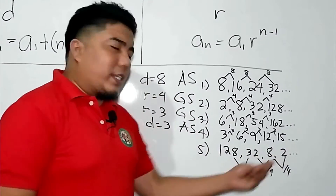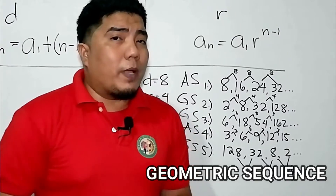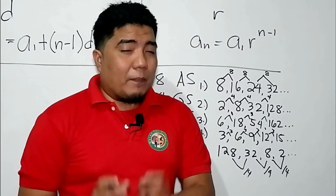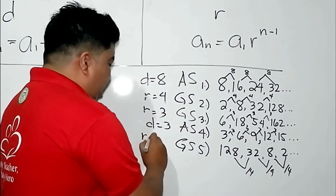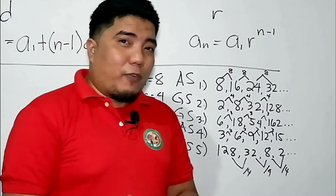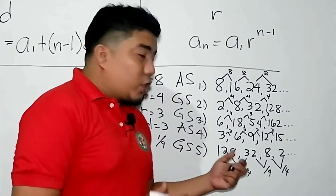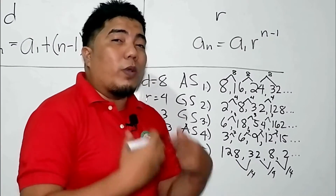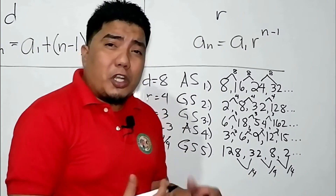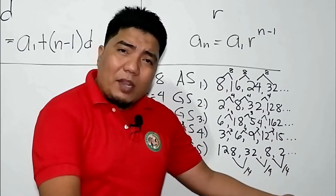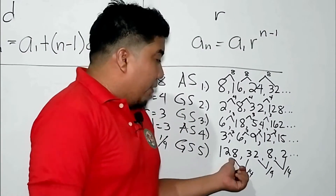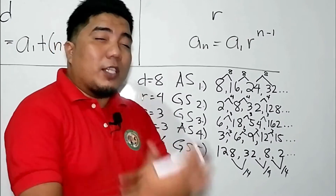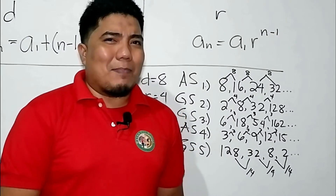This is also a geometric sequence because, as I said, geometric sequence uses a certain factor through multiplication or division to get the next term. Since this involves division, we cannot write the ratio as 'divided by 4.' Instead, we express it as the fraction one-fourth, because 128 times one-fourth equals 32, 32 times one-fourth equals 8, and 8 times one-fourth equals 2. So the common ratio is one-fourth. If we used 4, the sequence would go bigger, not smaller.